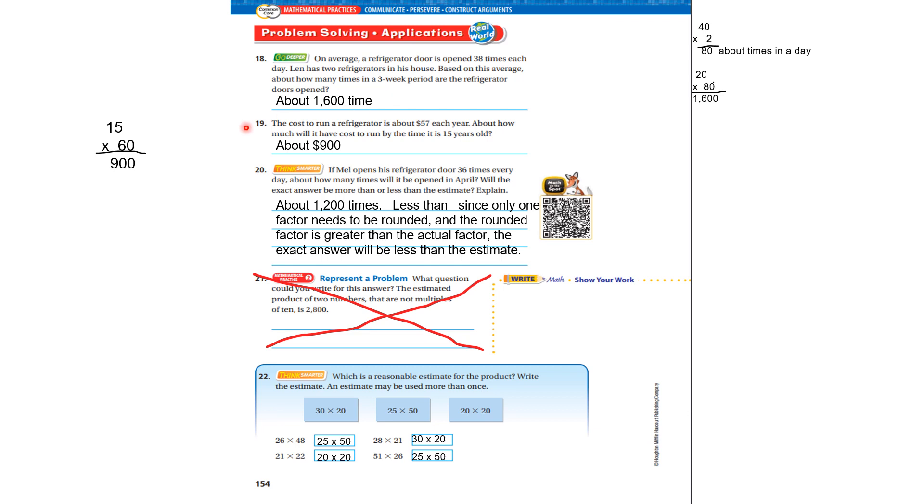The cost to run a refrigerator is about $57 a year. About how much will it cost to run by the time it is 15 years old? Well, it's about $900. I took that 57 and I made the estimate of 60, multiplied it by 15, and got 900.